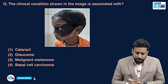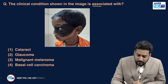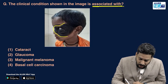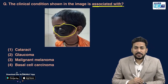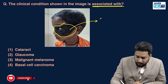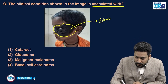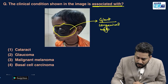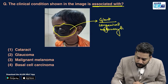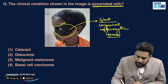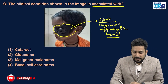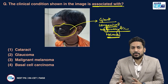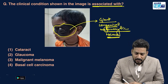In the clinical condition shown, what is this image associated with? Over the face of this child, a large black color lesion is present. This clinical presentation is of a giant congenital melanocytic nevus. Remember that this is a benign condition, present since birth, and it is due to benign proliferation of the melanocytes — the color-forming cells.